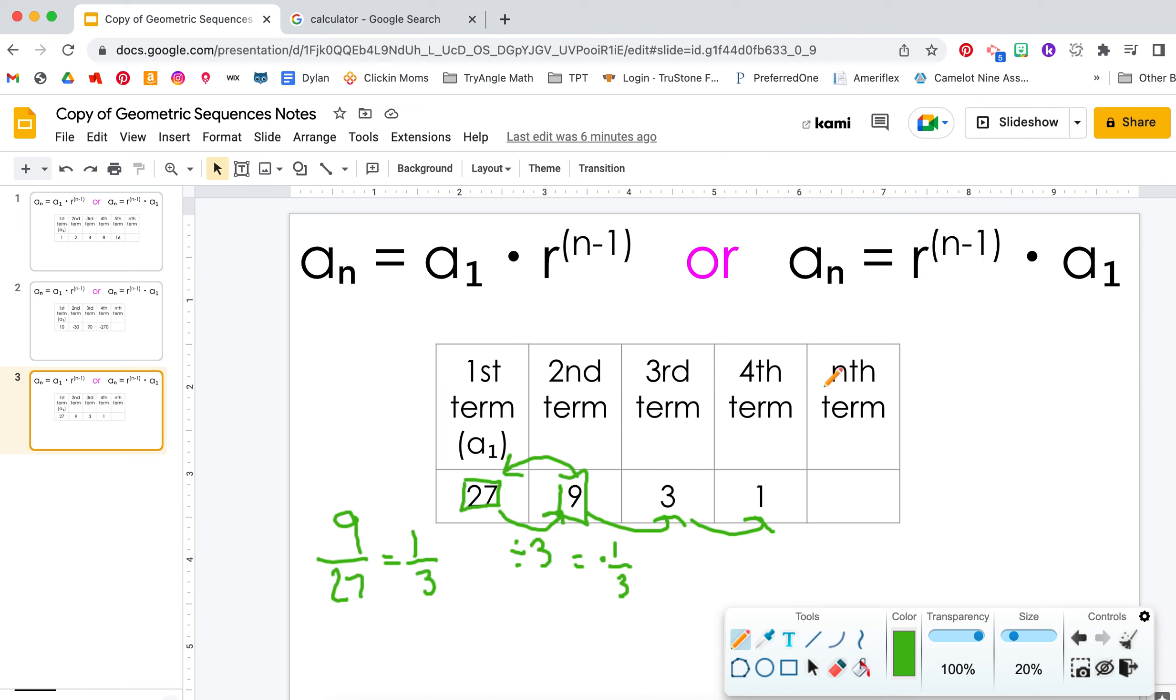So let's say we're going to solve for the 15th term for this one. So for the 15th term, it would be 1/3 to the power of 14 times the number we started with, which was 27.